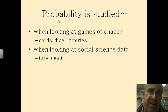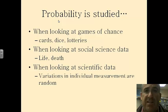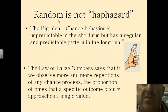When we're looking at social science data with regards to life and death, when we're looking at scientific data in regards to variations in individual measurements, when they're random, those are all different ways that we look at probability.